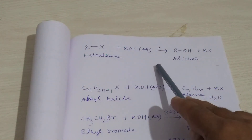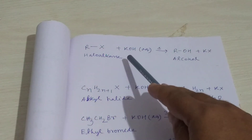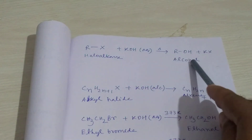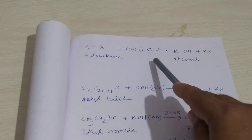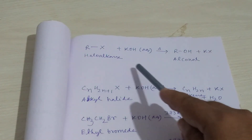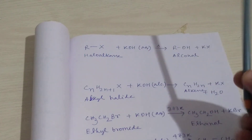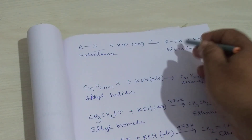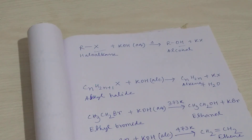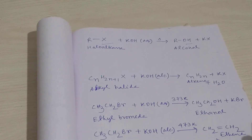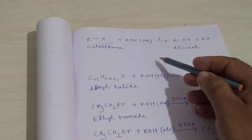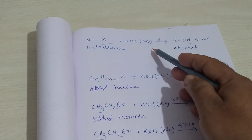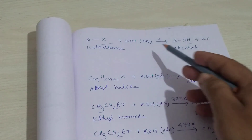In the first case, when aqueous potassium hydroxide reacts with haloalkane, it forms alcohol plus KX. This is a nucleophilic substitution reaction because here X is substituted by OH. Nucleophilic substitution occurs in the case where haloalkane reacts with aqueous potassium hydroxide.